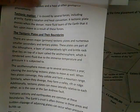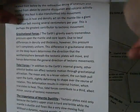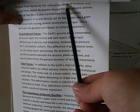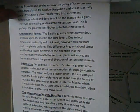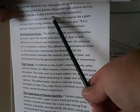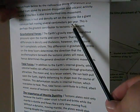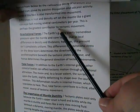Mantle convection — the middle layers of the Earth between the core and the crust are called the mantle. Heated from below by the radioactive decay of uranium and cooled from above by passive dissipation and volcanic activity — all of this is dynamic. Some of this heat is also transformed into movement. Differences in heat and density act on the mantle like a giant conveyor belt moving several centimeters per year. This is perhaps the greatest contributor to tectonic movement.